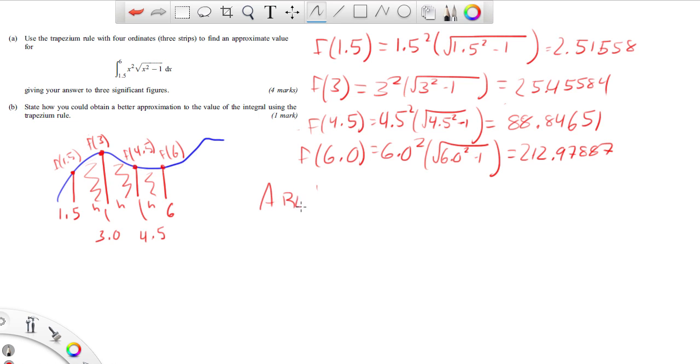So to find out the area, I'm going to do one-half the height, which is 1.5, and then I'm going to do this value at the end here, so the f of 1.5 which is 2.51558. Going to add the very last one, 212.97887.